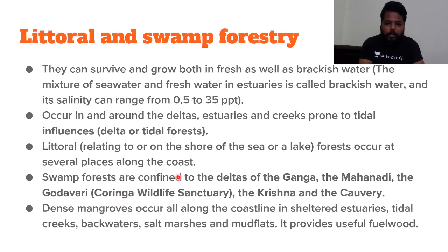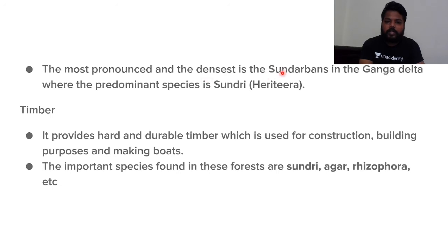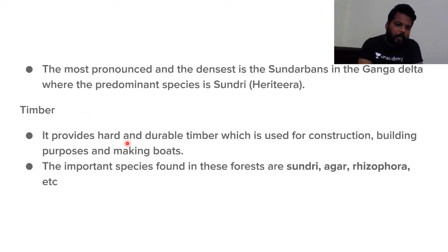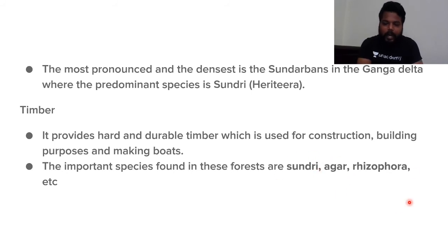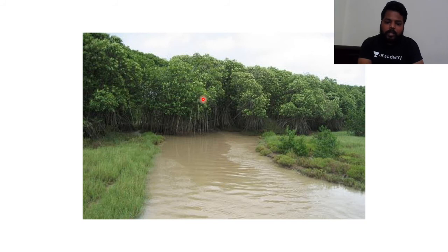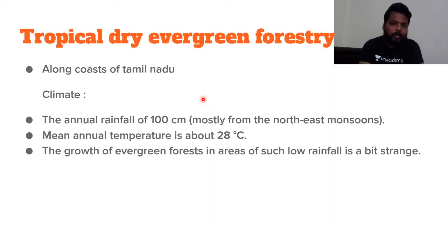Near the Godavari basin, we have the Coringa Wildlife Sanctuary. Mangrove forests occur all along the coast in sheltered estuaries. The densest mangroves are in the Sundarbans delta region — the Gangetic delta — where the most important species is Sundari, which gives this delta its name. The timber is hard and durable, used for construction and making boats. Important species: sundari, agar, and Rhizophora — found at the interface of fresh water and seawater.